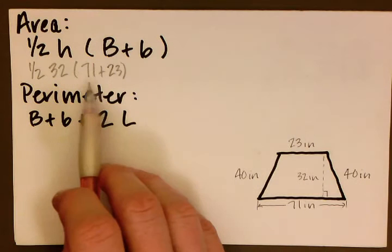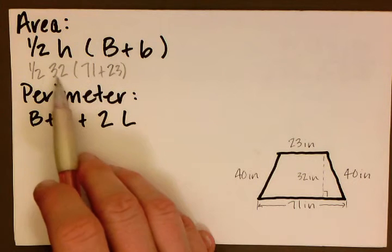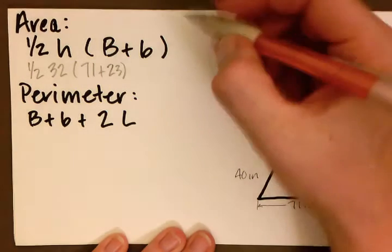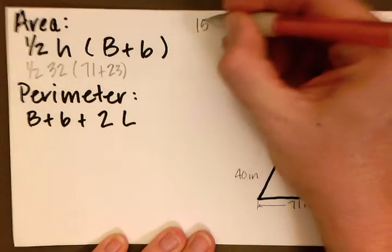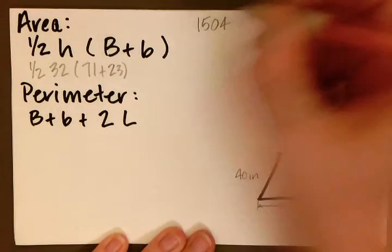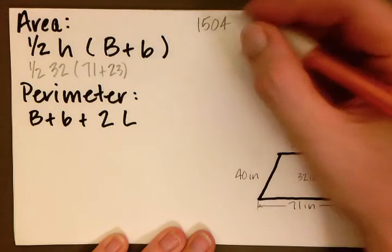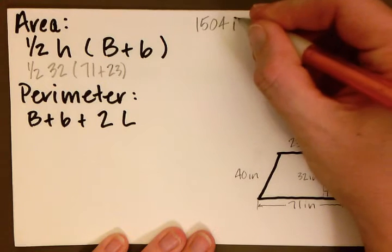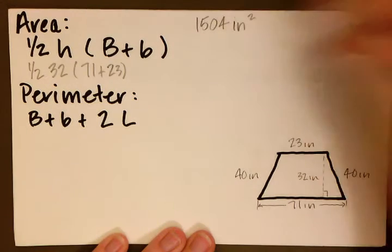Here we'll add these two items together, 71 and 23. Multiply that by 32. Multiply that by one half. And when we do that, we get 1504. Because this is area, we always want to square our answer and it is in inches, so we're going to have inches squared here.